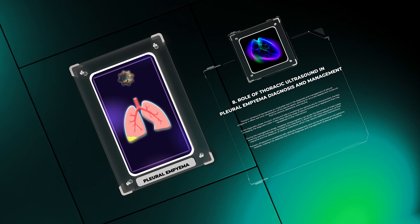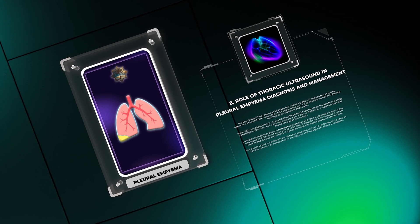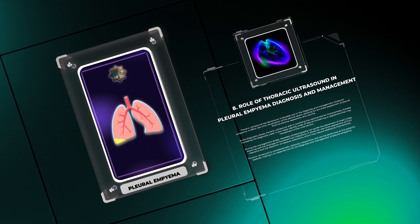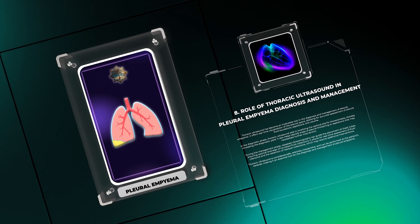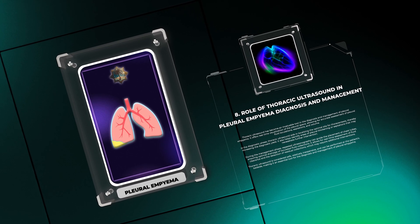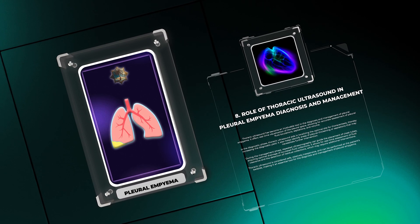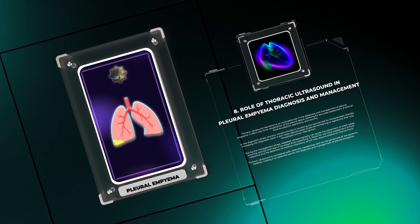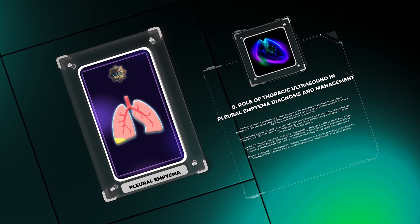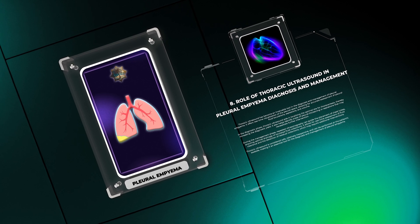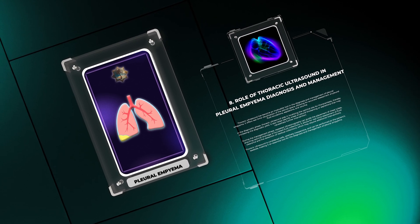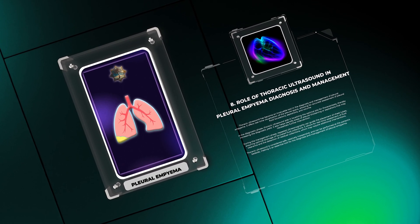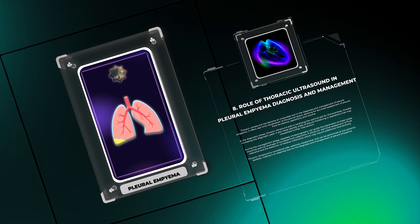Thoracic ultrasound has become an invaluable tool in the diagnosis and management of pleural empyema. It offers real-time visualization of the pleural space, allowing for accurate assessment of pleural fluid, loculations, septations, and volume. In the diagnostic phase, thoracic ultrasound aids in localizing the optimal site for thoracentesis, increasing diagnostic yield, and identifying areas of pleural thickening or septations that may necessitate further intervention.